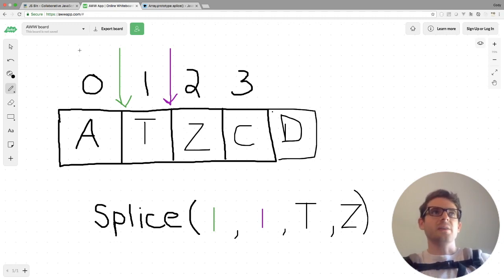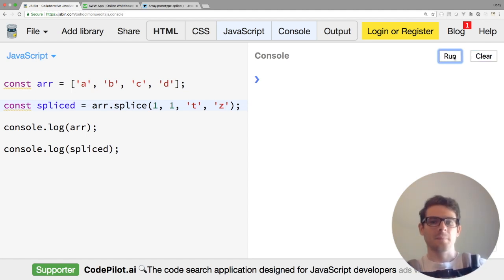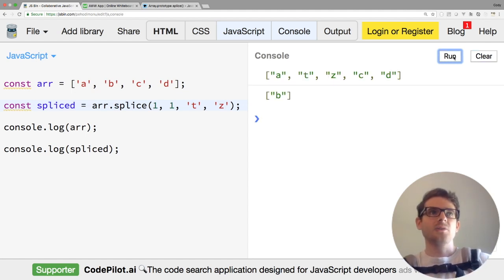So let's try this out in JS bin. So we're splicing from index one, count of one. We want to pass in T and we want to pass in Z. So after running this, you notice that the B was removed from the original right here. And in its place, we put in a T and we put in a Z. And now our original array is a length of five.